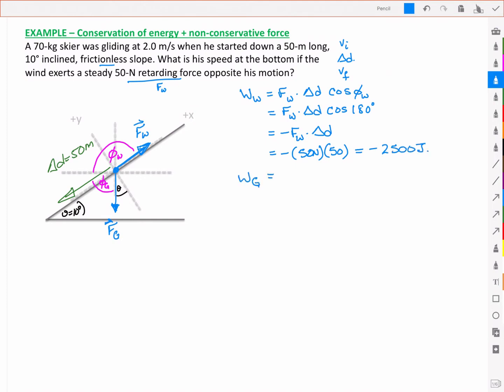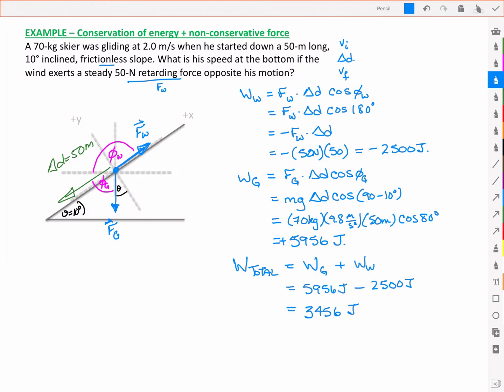The work due to gravity then is given by the force of gravity, again the delta D and now the cos of phi G. And phi G is just 90 minus 10 degrees because my incline is 10 degrees. And so I'm left with 5,956 joules and that's a positive just to emphasize. My total work then is just the sum of those two. So I have a positive 3,456 joules.